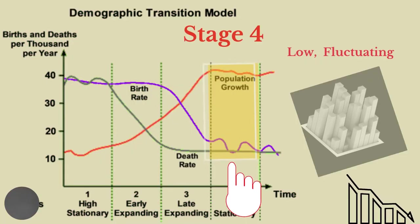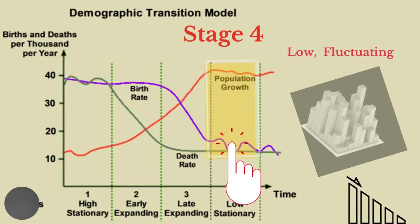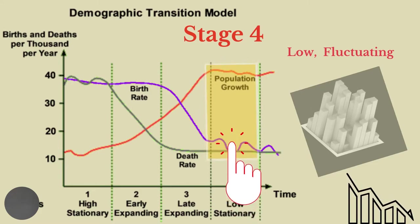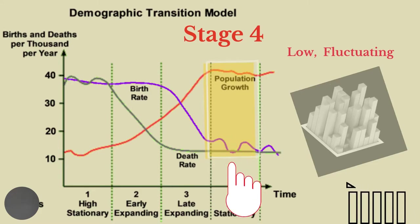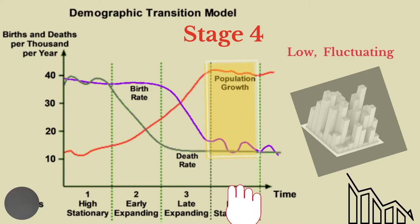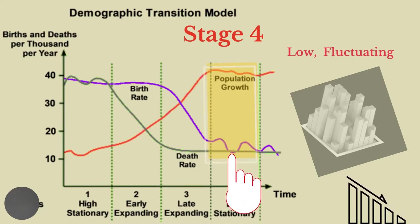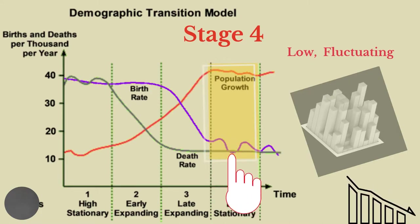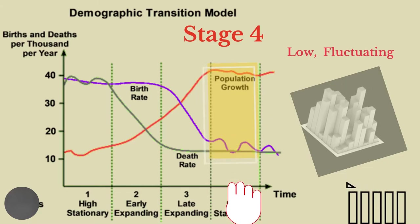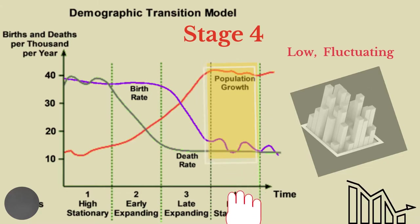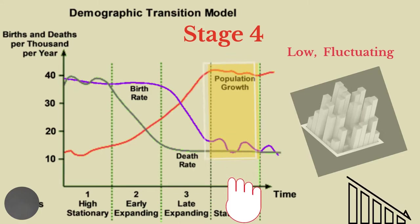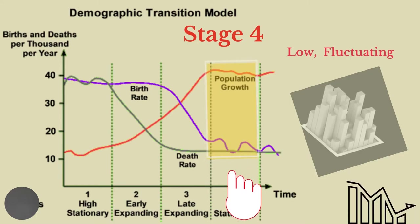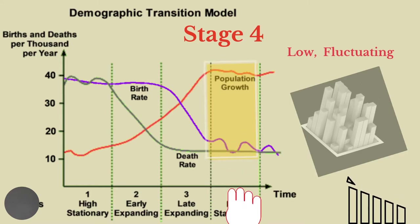At stage four, both birth and death rates decline further and are both very low, so population growth is very small. Most women wait until they have completed their studies to start having a family, and many desire only a few children so they can give them a better quality of life. Life expectancy continues to increase as medicine improves. Nevertheless, older persons contribute more to death rates.